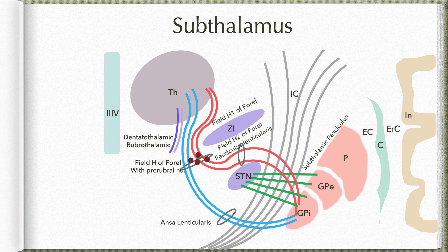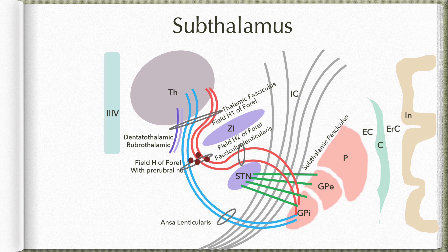At field H1 of Forel, these fibers are also joined by the dentitothalamic and rubrothalamic tract fibers, which are also destined for the ventral anterior and ventral lateral nuclei. All these fiber bundles together present in field H1 of Forel form what is known as the thalamic fasciculus. So the subthalamic fasciculus connects the subthalamic nucleus with the globus pallidus; the fasciculus lenticularis passes through field H2, joining with the ansa lenticularis at field H of Forel; and both ascend through field H1, joining dentitothalamic and rubrothalamic fibers to form the thalamic fasciculus, which relays in the ventral anterior and ventral lateral nuclei of the thalamus.